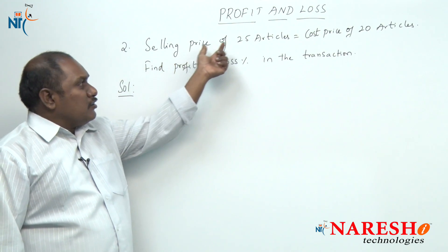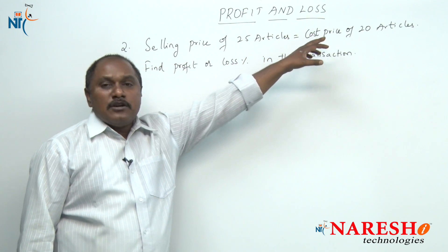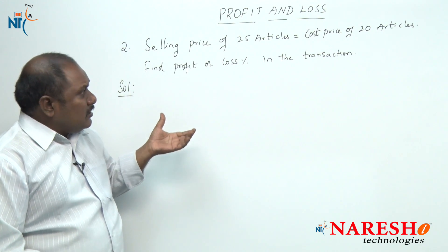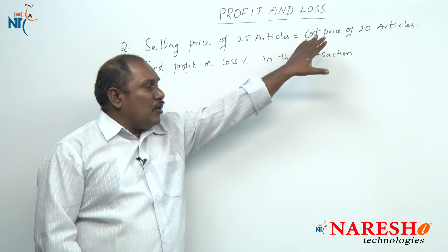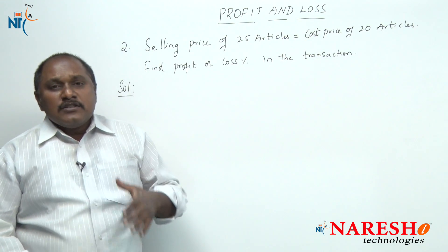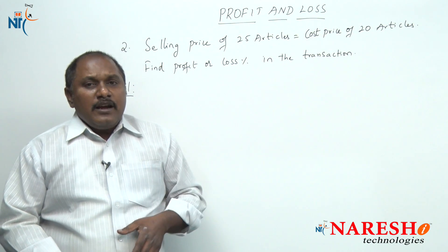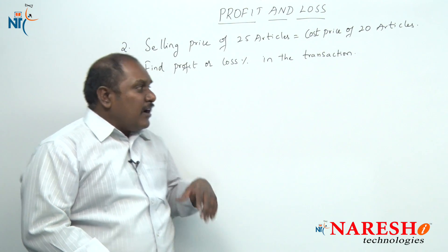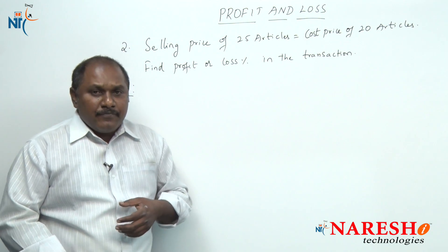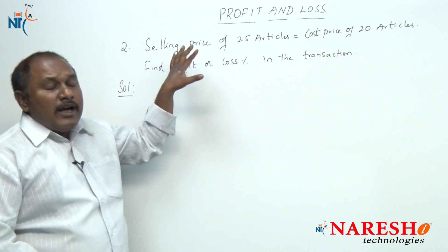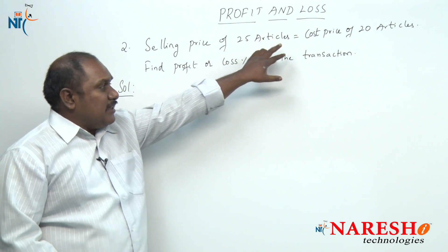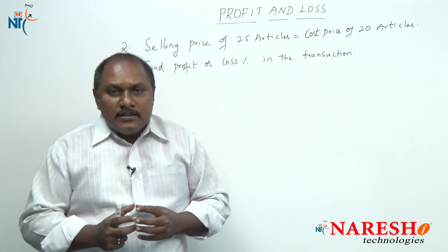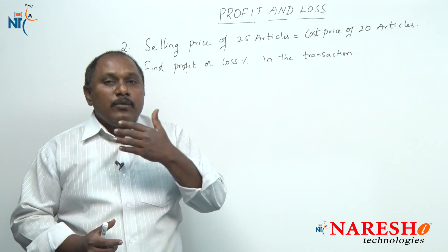Second problem: the selling price of 25 articles is equal to the cost price of 20 articles. Find profit or loss percent in the transaction. The money you are spending to buy 20 articles is the same as the money you get by selling 25 articles. This problem can be solved in two ways — in terms of money, or in terms of quantity. Let us solve it with respect to quantity.